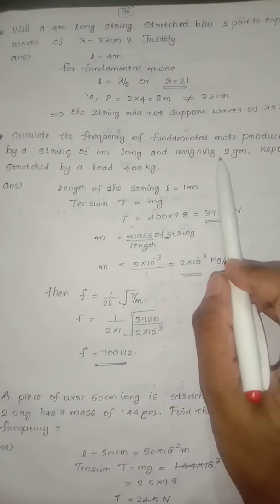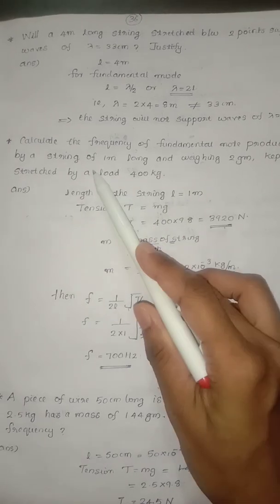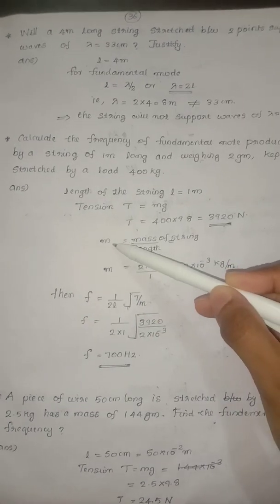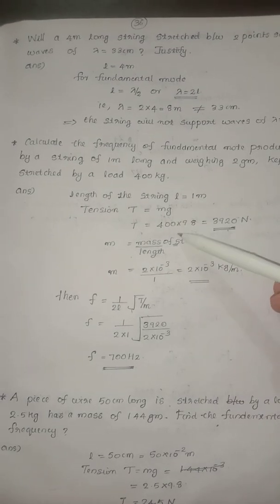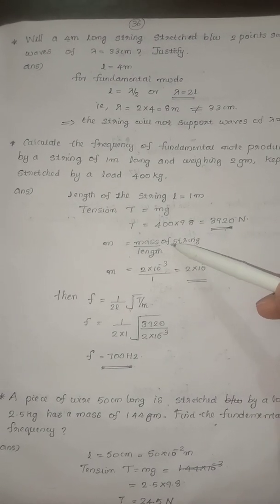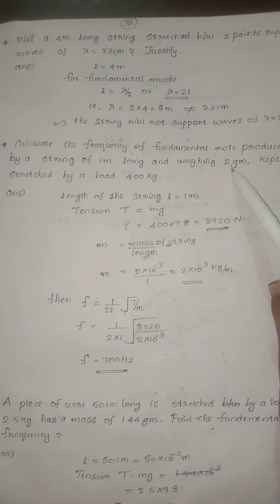The smallest mass 2g. m equals mass of the string divided by length of the string, so this is the smallest mass.